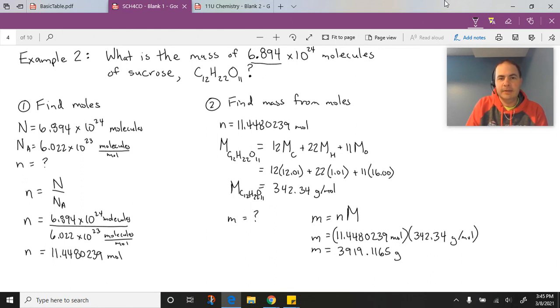We see the 6, 8, 9, and 4 are all significant. Avogadro's constant had four significant digits. So our final answer should have four significant digits.